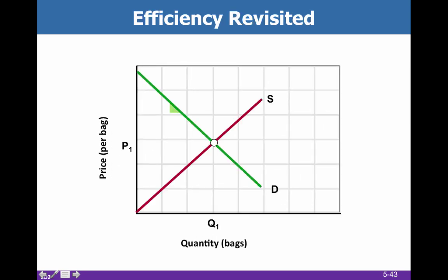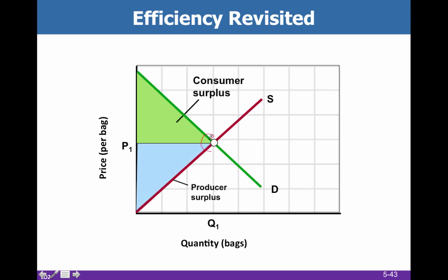When a market is working efficiently as it's supposed to, here's our equilibrium that gives us a certain quantity and a certain price. That price-quantity combination is the efficient market — meaning we are allocatively efficient. We're producing the correct amount, which gives us consumer surplus and producer surplus in those two areas.